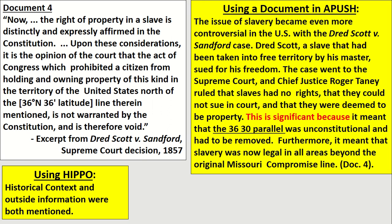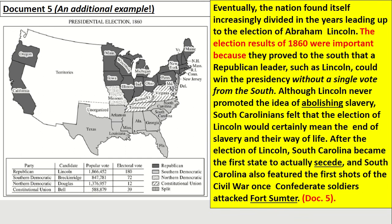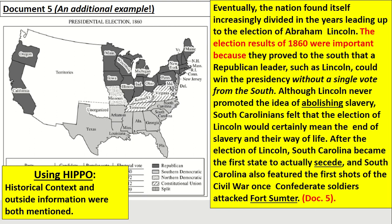What you're trying to do with all of these documents is make them almost talk and interact with each other — group together the ones that work well with each other. Document five is a political map of the Election of 1860. The student did a great job using HIPPO: they used context, and brought in outside information like Fort Sumter, secession, and Abraham Lincoln's rise to political fame. That's a fantastic use of a document in a body paragraph.